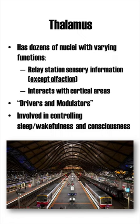The thalamus receives early sensory information and sends this information forward to the primary sensory cortices. The thalamus also interacts back and forth with the cortex. Besides simply relaying information with so-called driver networks, the thalamus also modulates signals with so-called modulator networks, which can amplify or weaken a signal.